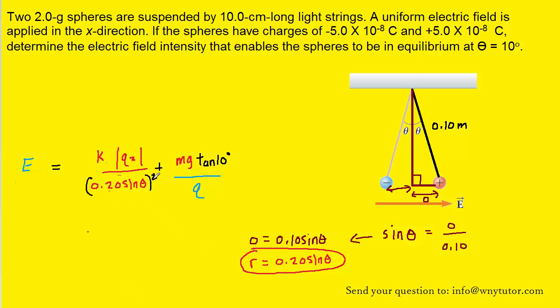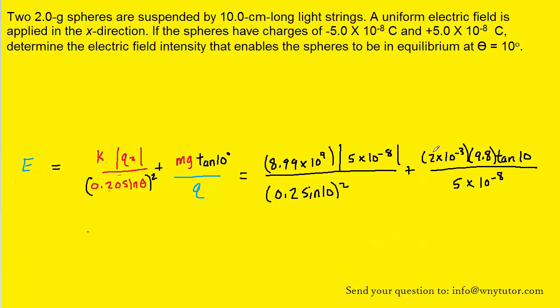Finally, we are prepared to plug in all the known values. Notice when we plug in, we've converted the 2 grams into kilograms by multiplying by 10 to the minus 3. Also remember that Q was the charge of the positively charged sphere, 5 times 10 to the minus 8, so we've plugged that in. And of course, theta was given as 10 degrees. K is the Coulomb's constant, which is also a known value. And when you calculate this, you should get approximately 4.4 times 10 to the fifth newtons per coulomb as the magnitude of the electric field.